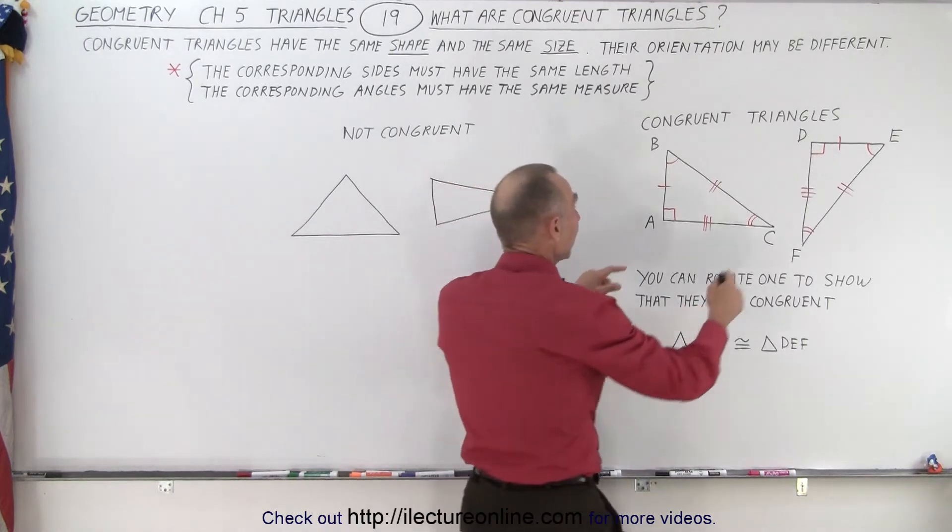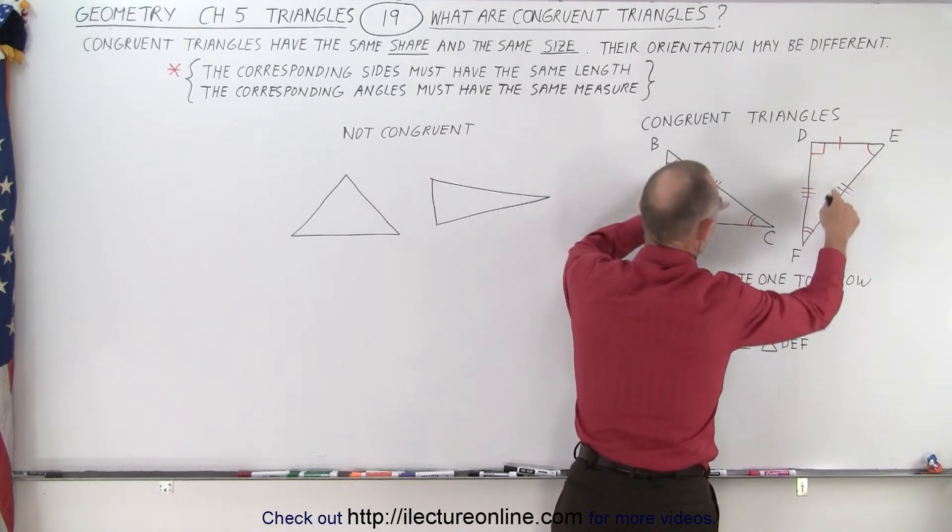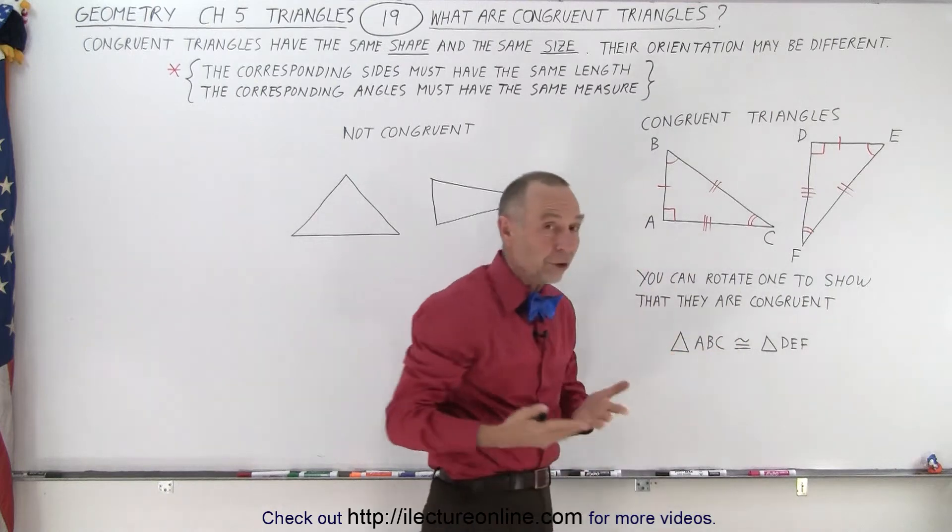But we can also see that these two angles have the same angular measure. These two angles have the same measure, and these two angles have the same measure. So definitely the two triangles are congruent.